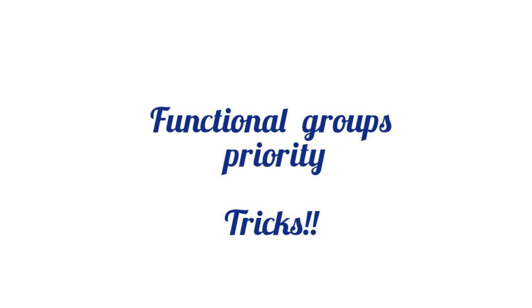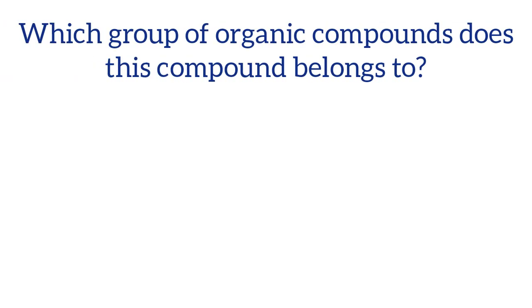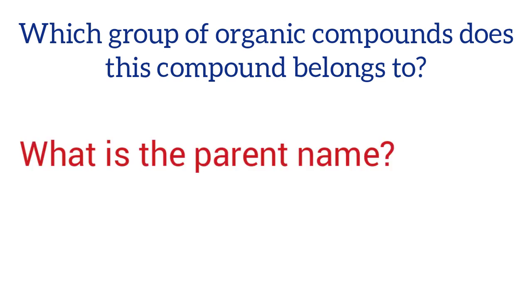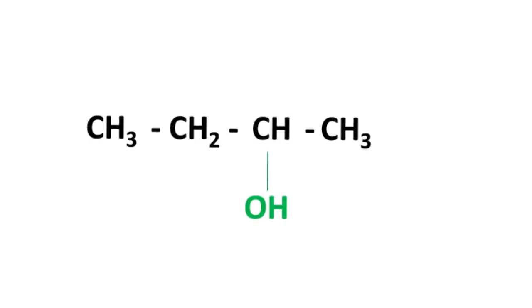If you were asked to name a compound, the very first question you'd ask yourself is: which group of organic compound does this compound belong to? And then, what is the parent name predicted from the functional group? So let's try that. For this compound, you would say it's an alcohol.